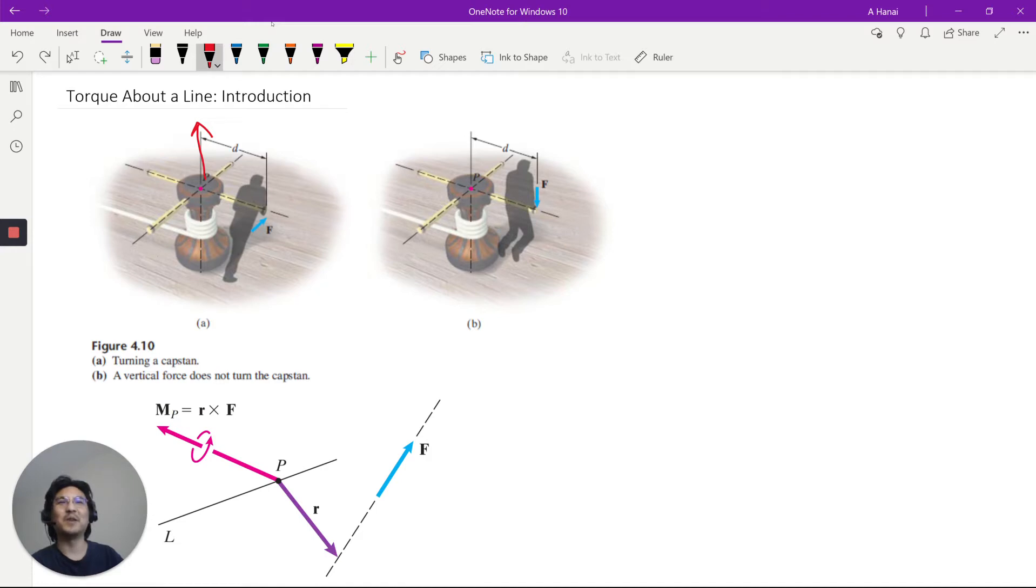But if you apply that same 100 newtons, say downwards, so then it's more like R cross F, the torque will be this way. So that 100 newtons of force 2 meters away from point P will turn the winch. That same magnitude of force applied in the wrong direction does not at all turn the winch. So what we care about is how much torque is applied along this axis of rotation.